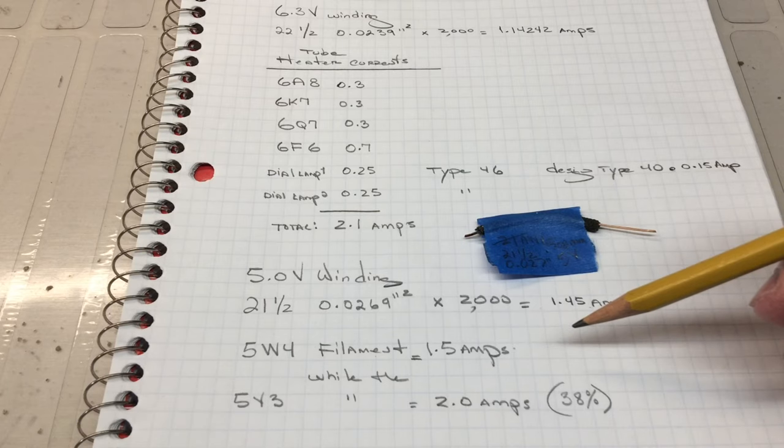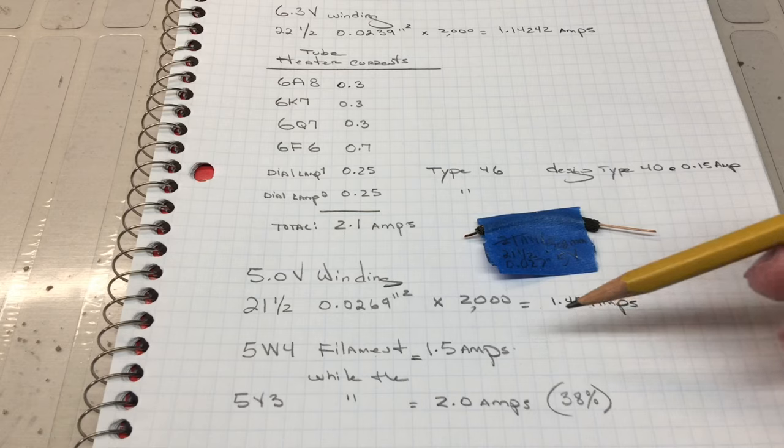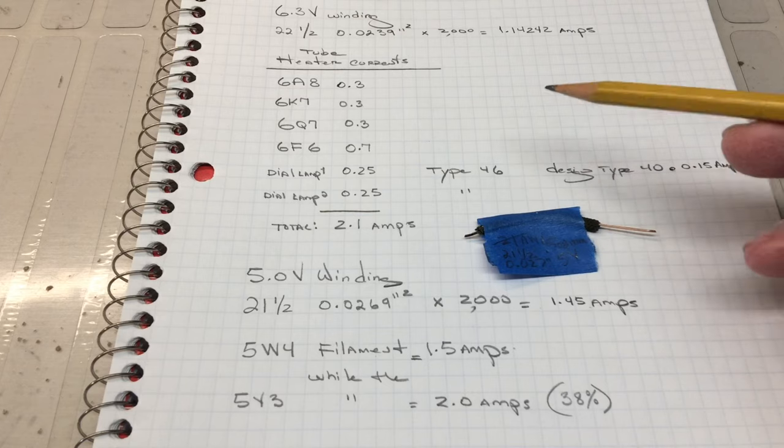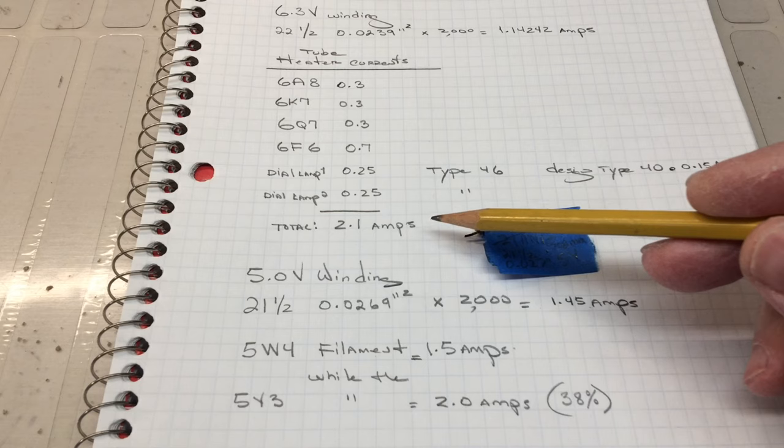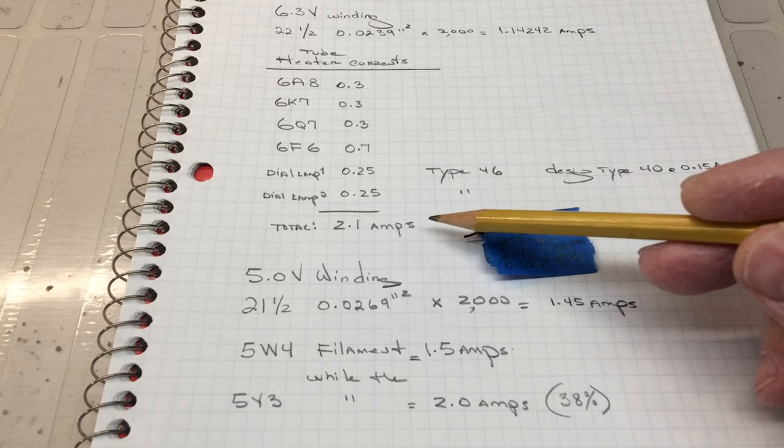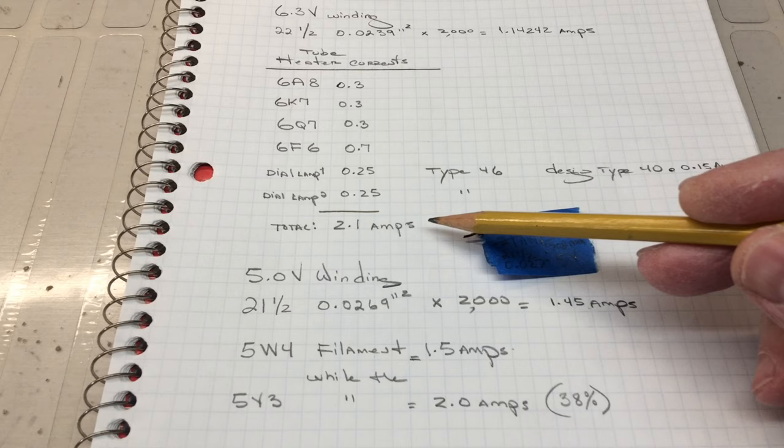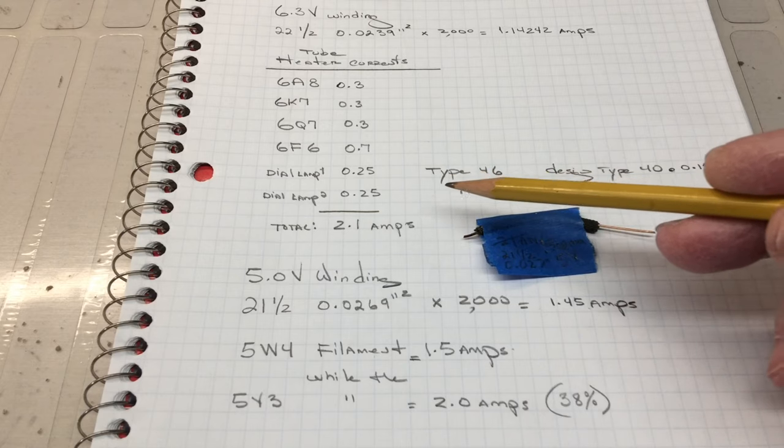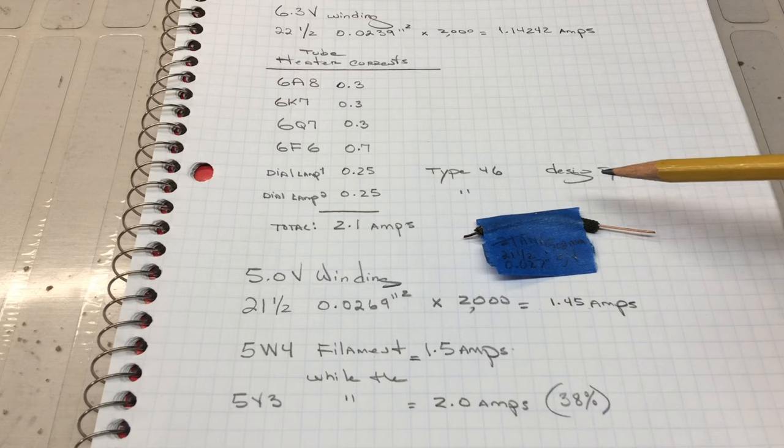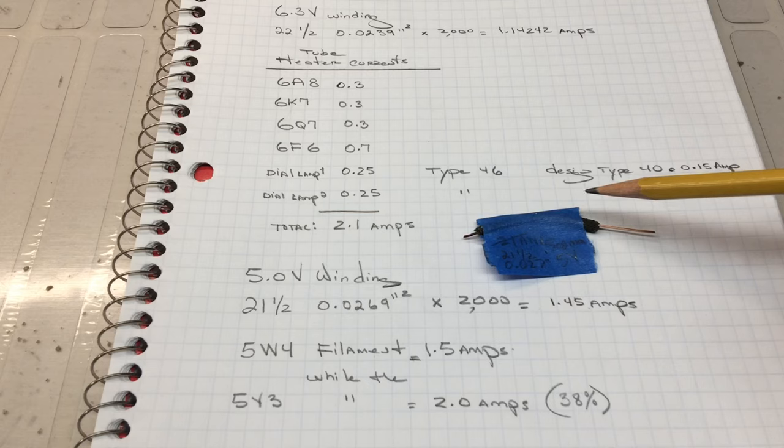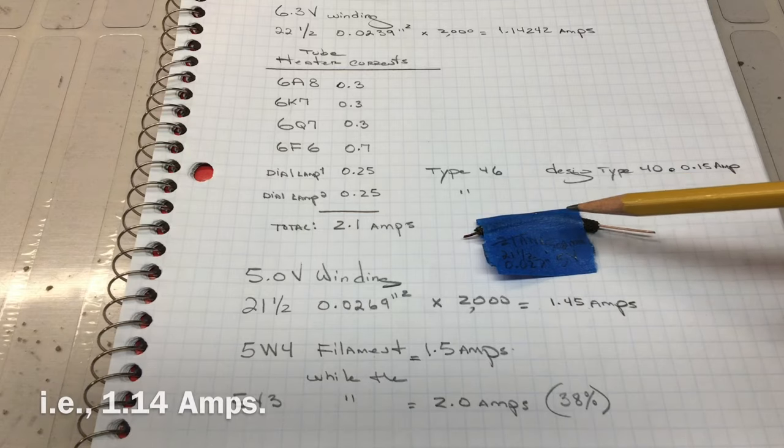So, with all the above information, it seems the transformer was marginal at best to even work in this receiver. In particular, the 6.3-volt winding was undersized since this thing has the 2 dial lamps in addition to the tube heater current, so over 2 amps of current.